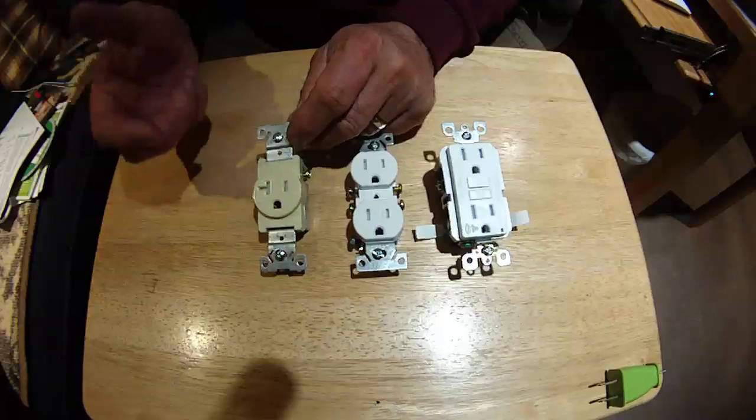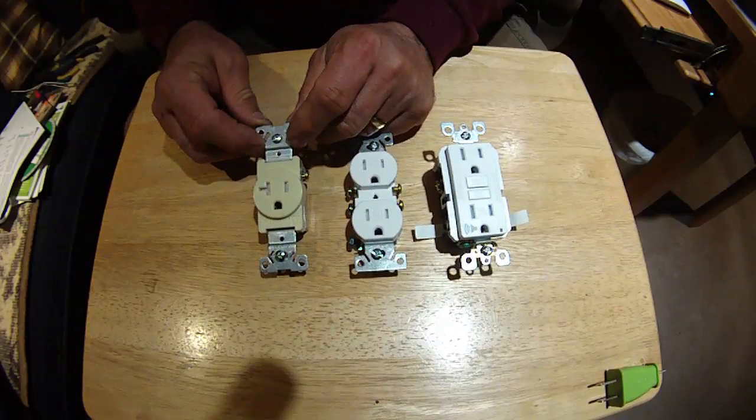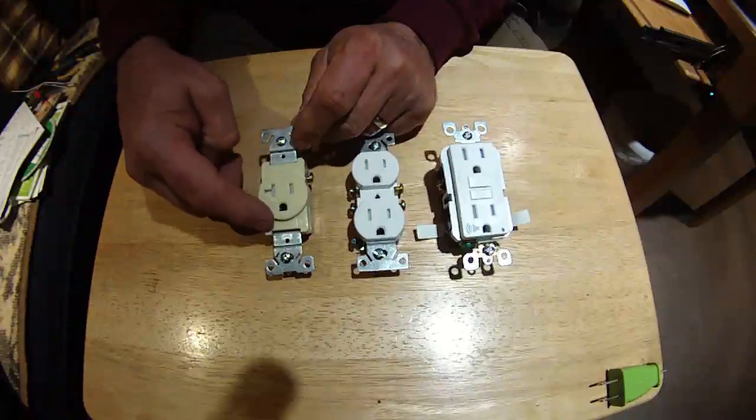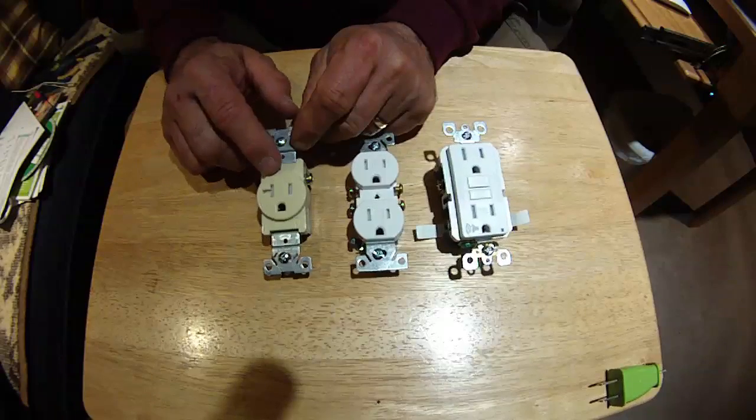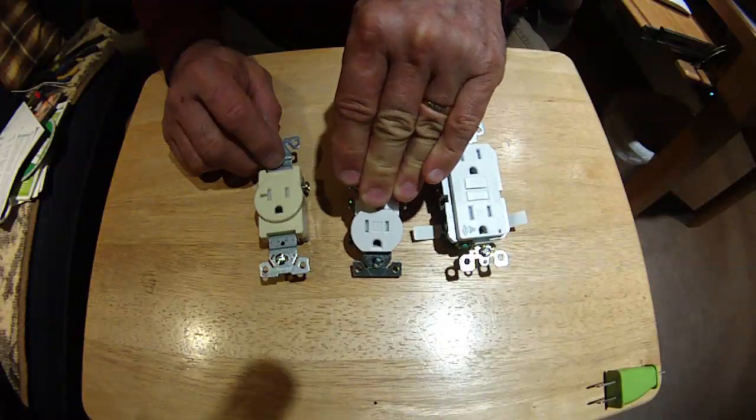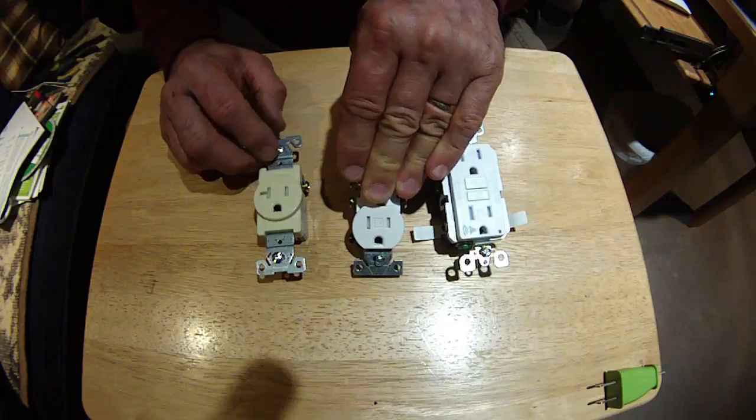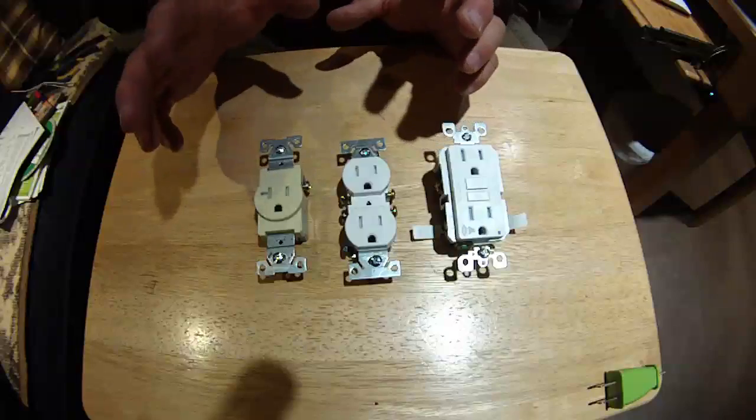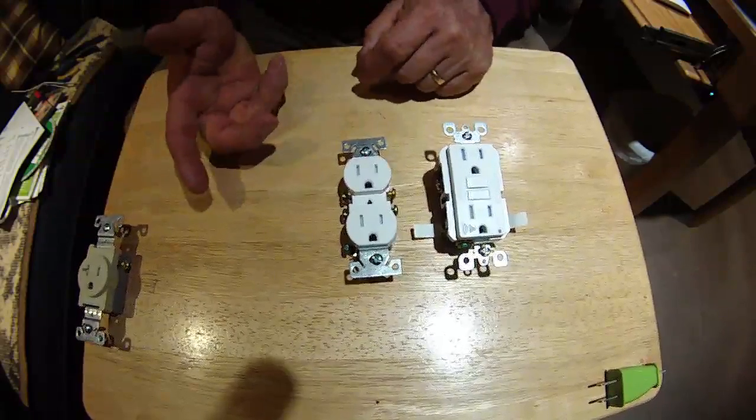The single receptacle is used someplace where we have to have a dedicated receptacle, like an air compressor or refrigerator or someplace I don't want to plug anything else in but that device. It has to be a 20 amp circuit if it's a 20 amp face. If it's a 15 amp circuit, I can get away with just a 15 amp single receptacle. The only time I have to have a receptacle that matches the circuit is if I have a single dedicated circuit.